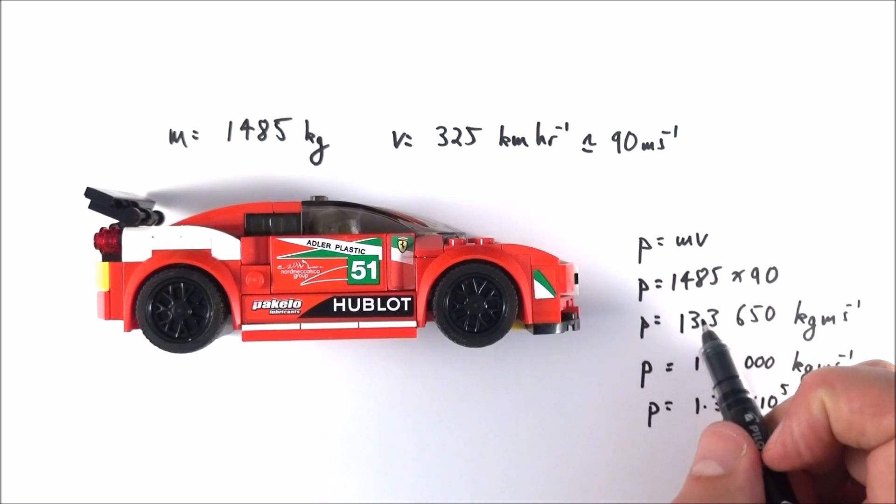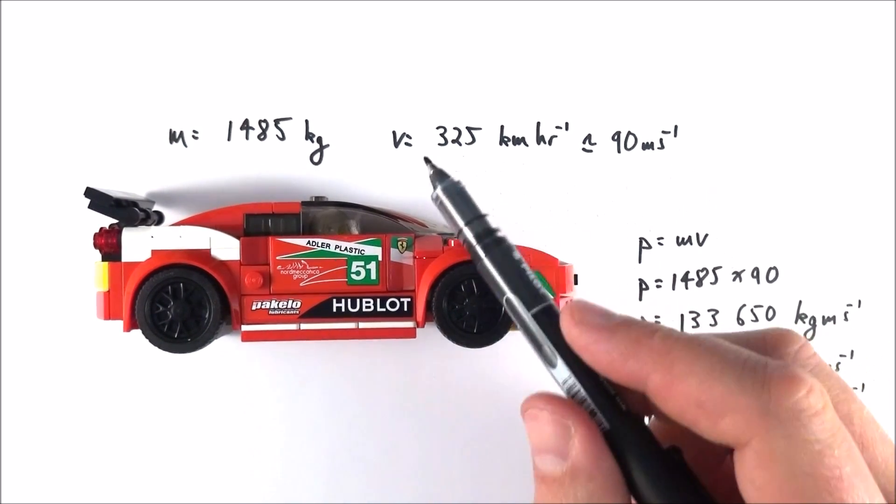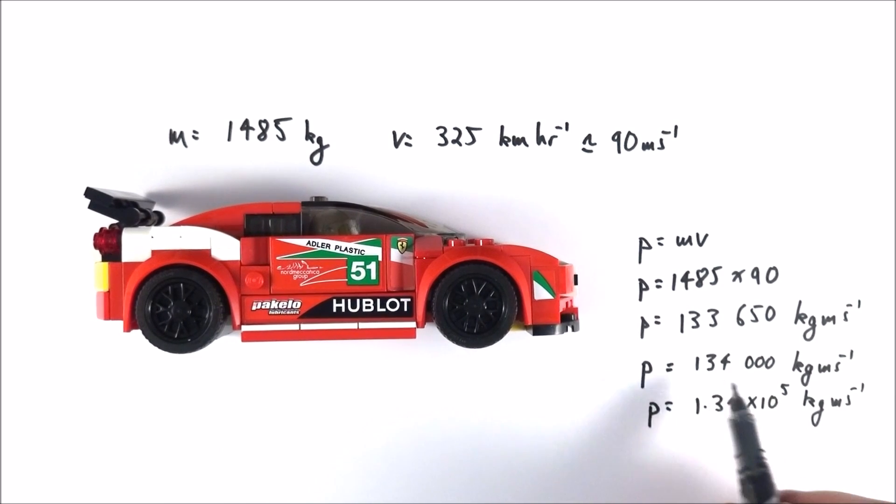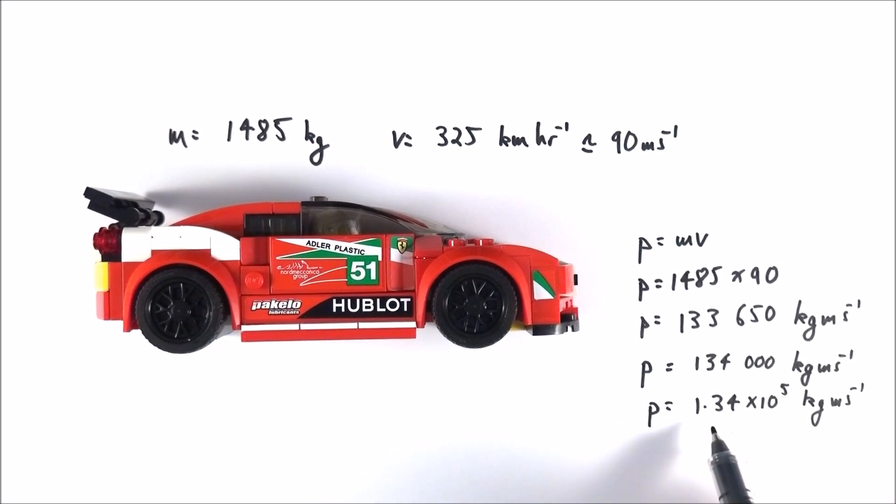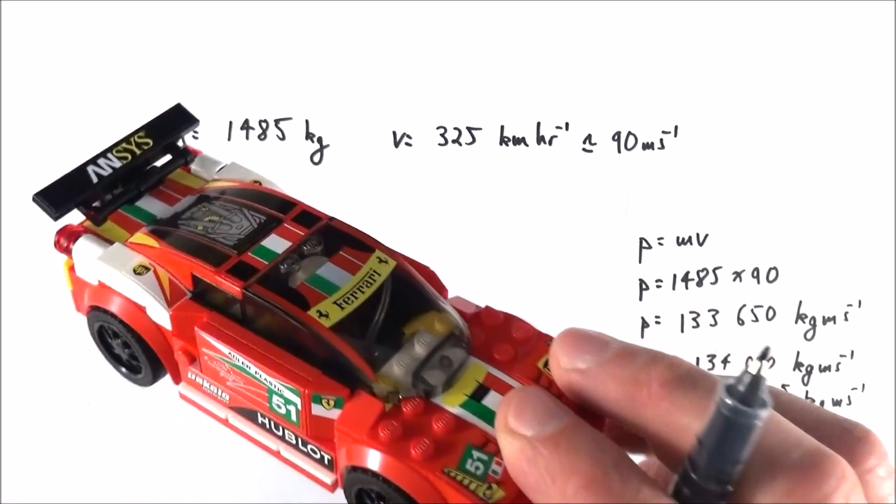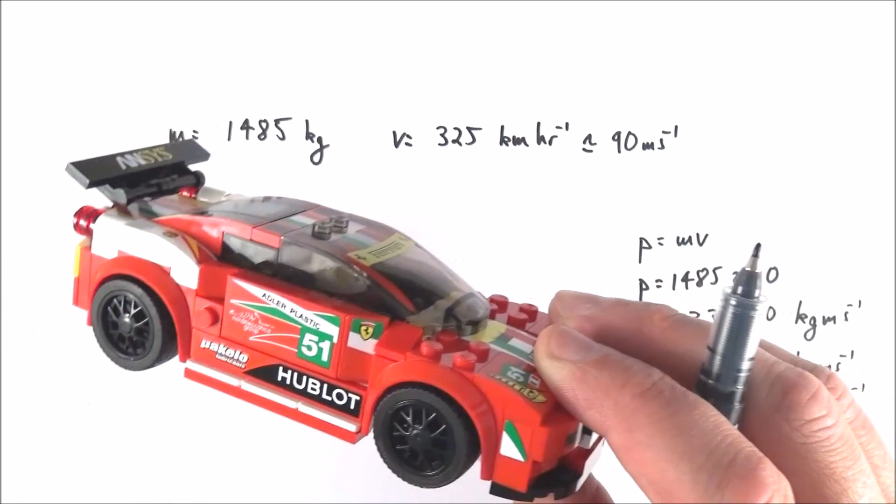Now although this is the raw data, it's probably more appropriate to give it three significant figures in line with the raw data we had in the question. But if I write it as 134,000 it's maybe a bit unclear to think is that significant or not these zeros, so I'm going to give my final answer in standard form as 1.34 times 10 to the 5 kilogram meters per second. So that's the kind of momentum that a heavy object has when it's moving quickly.